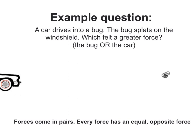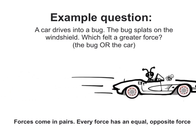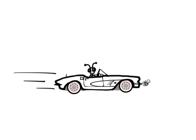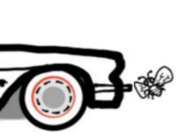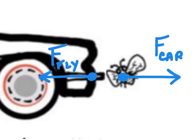If a bug is flying along the highway and a car comes along and smacks into it, which will feel a greater force? According to Newton's third law, the force on both should be of equal magnitude in opposite directions. Now because the car has so much more mass, its acceleration is going to be less due to Newton's second law. The bug is going to have a lot less mass and a lot more acceleration, which is why it's more noticeable for the bug.